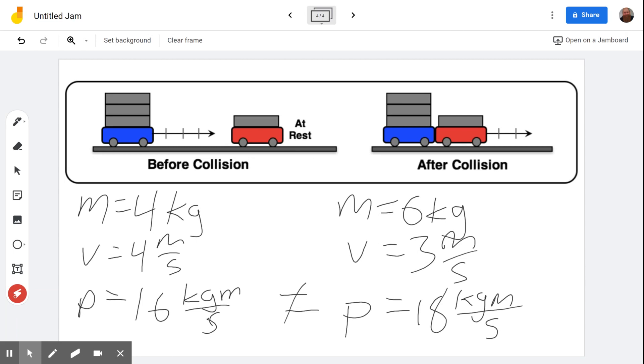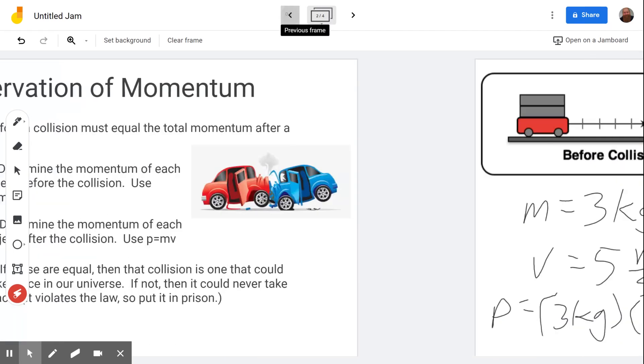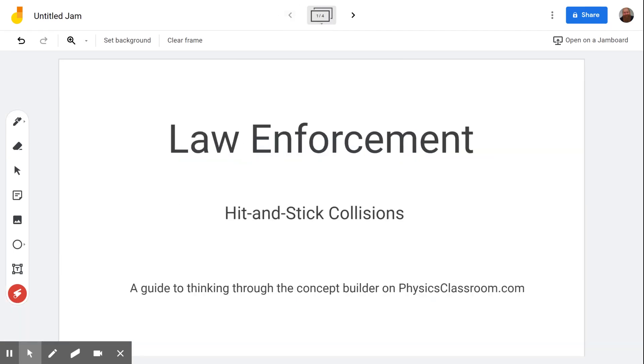And so you would put this one in prison, you'd click on it, you'd see jail bars over this because it violates the law, send it to prison. But in reality, it just wouldn't happen. It would go at a different speed. It would not go at this speed. Thanks for listening. I hope that helps you as you work through the concept builder titled law enforcement hit and stick collisions. Thank you for listening.